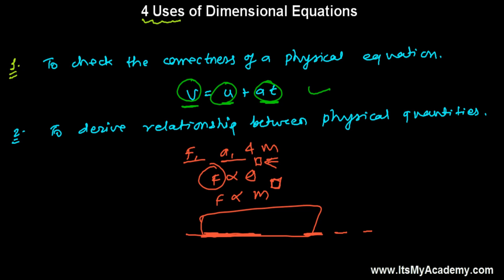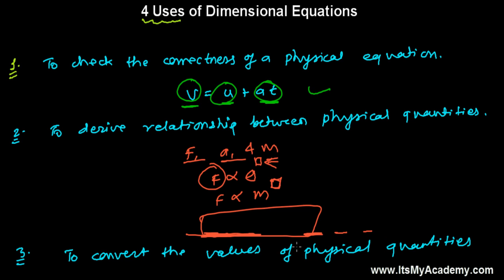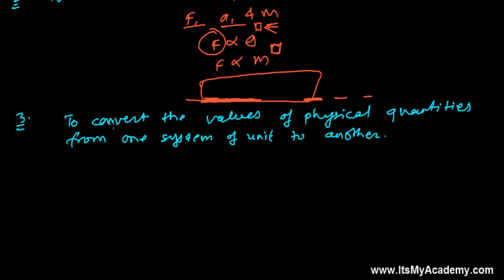I'm just showing you here what are the main uses. The third use is to convert the values of physical quantities from one system of unit to another system of unit. We have a lot of systems of units — like the MKS system, CGS system, FPS system, and many more. Internationally, we follow SI units.